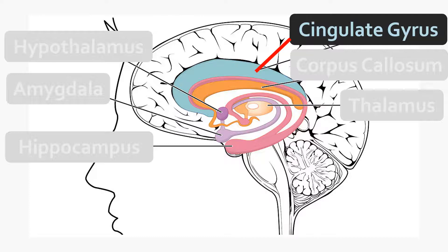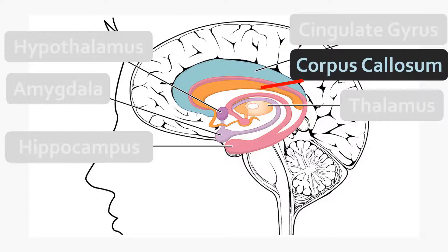Let's talk briefly about the cingulate gyrus. It's a big part of the limbic system with important roles in learning and memory, but it doesn't have a discrete function unique only to it. The corpus callosum — the white matter tract connecting the two hemispheres — is also shown here; it's not really a part of the limbic system functionally, but it's a useful anatomical landmark for locating the cingulate and other regions.